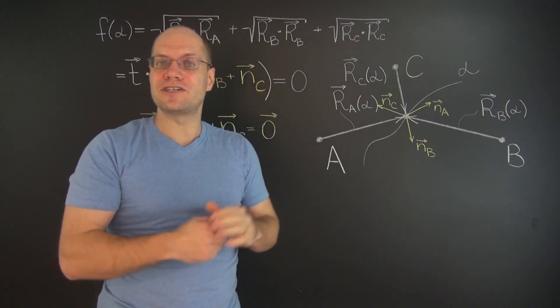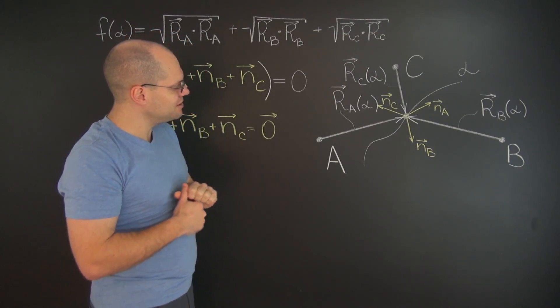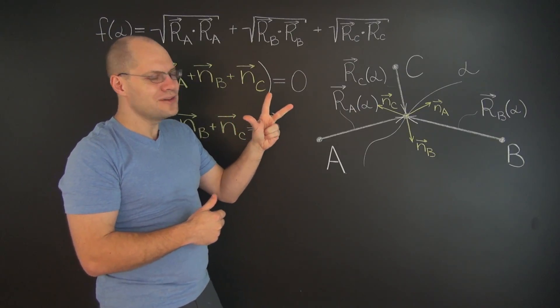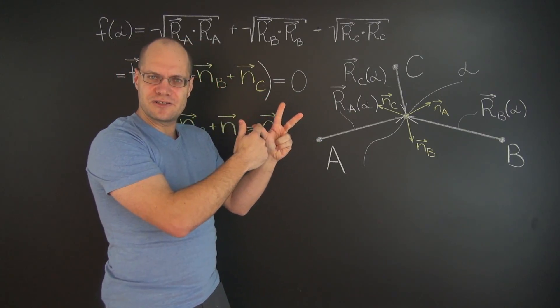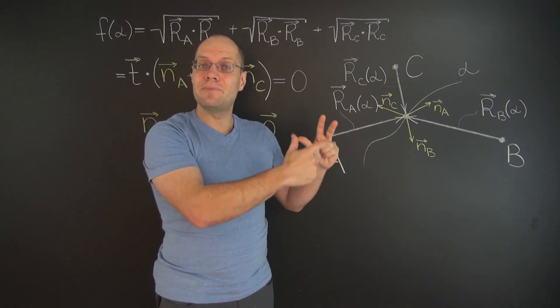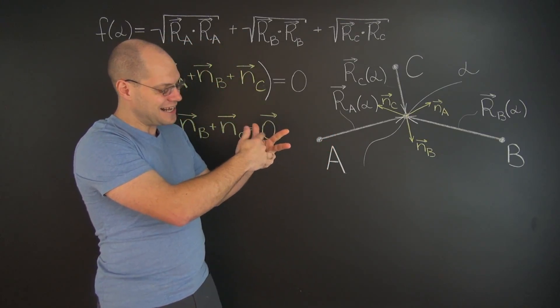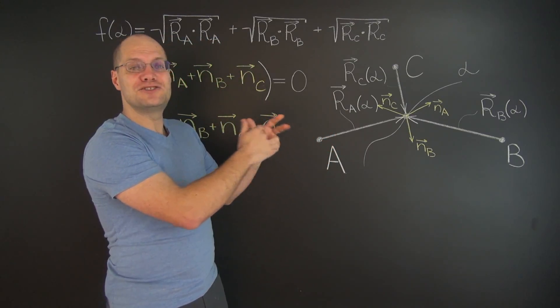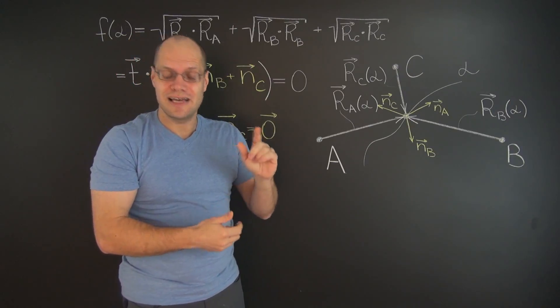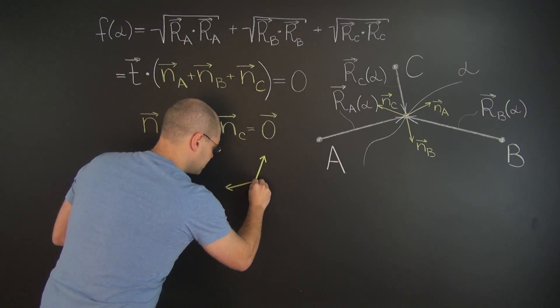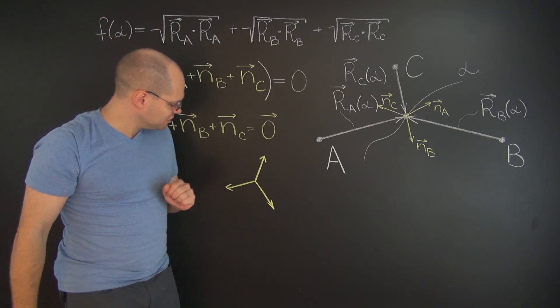But what's the geometric interpretation? Well, if you really think about it, the only way to arrange three unit vectors so that their sum is zero is to make them point at 120 degrees to each other like this.